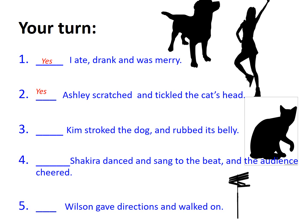This next one: 'Kim stroked the dog, and rubbed its belly.' Here no comma is required. You can actually tell that by the fact that the dog is referred to as 'its' later on. It should instead read 'Kim stroked the dog and rubbed its belly.' It's referring back to the dog as 'its,' suggesting there should be nothing breaking it up in this part of the sentence.